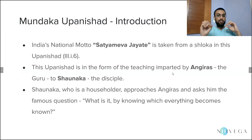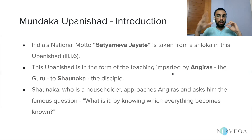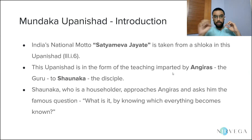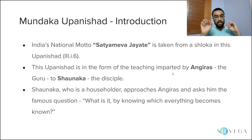India's national motto, which we find written below the national emblem of the Ashoka lions, 'Satyameva Jayate', is taken from a shloka found in this Upanishad. The shloka goes 'Satyameva Jayate Naanritam' and it is found in the third Mundaka, first Khanda — it is the sixth shloka.